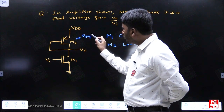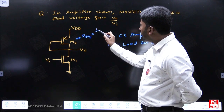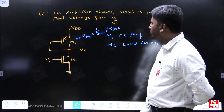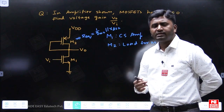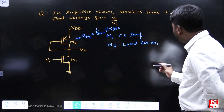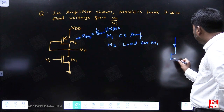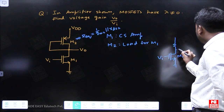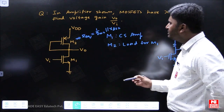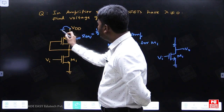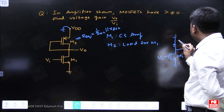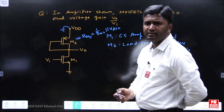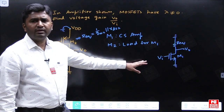In our analysis, M2 will be replaced by R_equivalent, which is (1/GM2) ∥ RDS2. In AC analysis, the VDD node is grounded, so R_equivalent acts as the load to ground. This simplifies the circuit to a common source amplifier M1 with load R_equivalent = (1/GM2) ∥ RDS2.